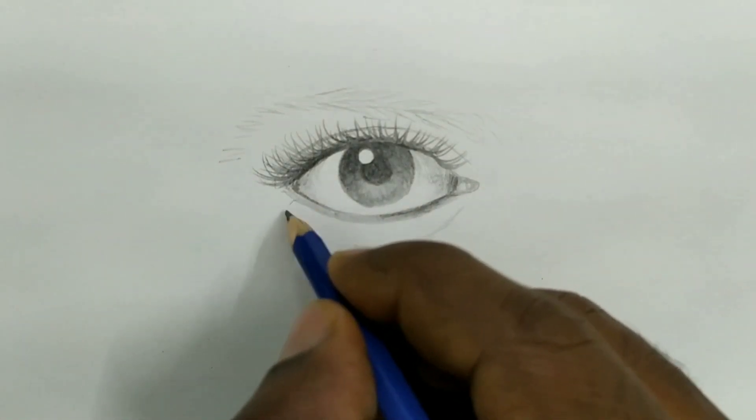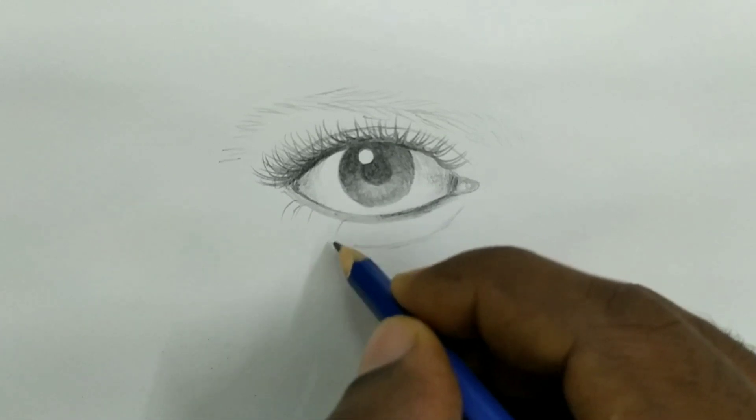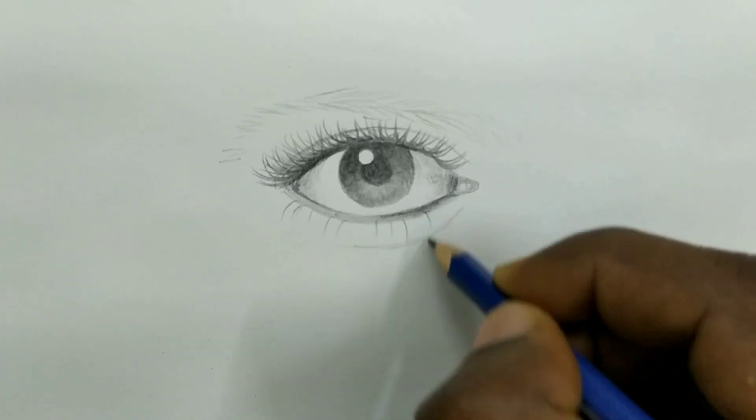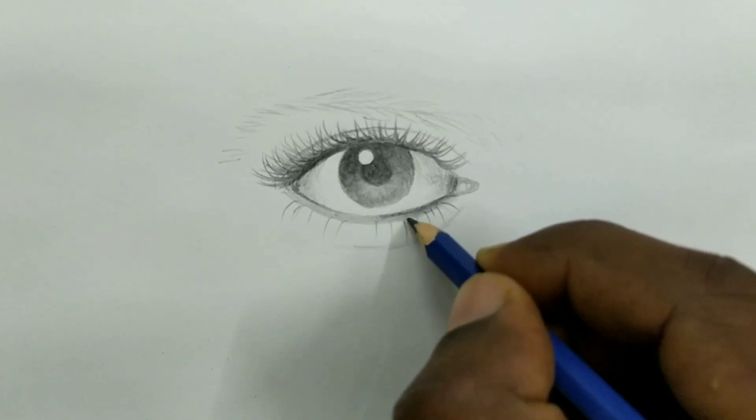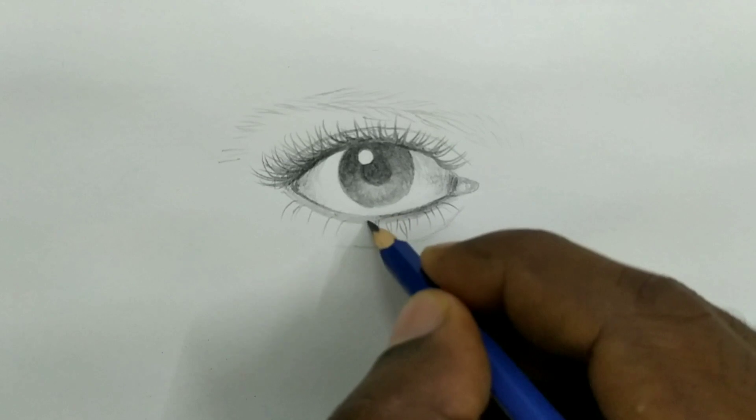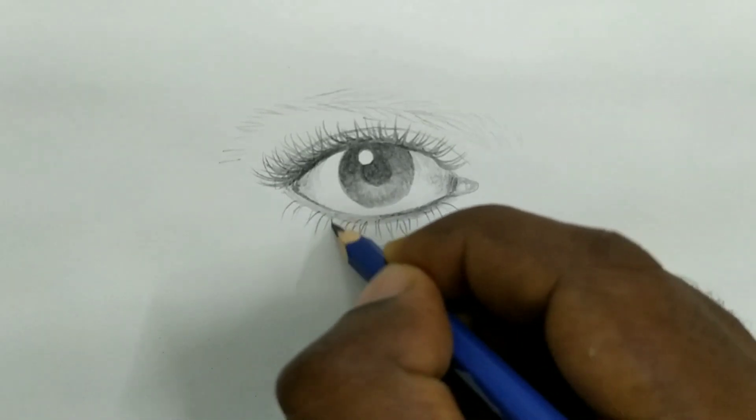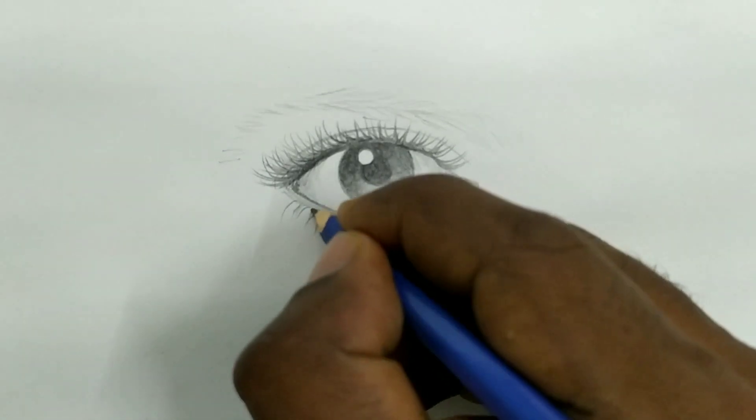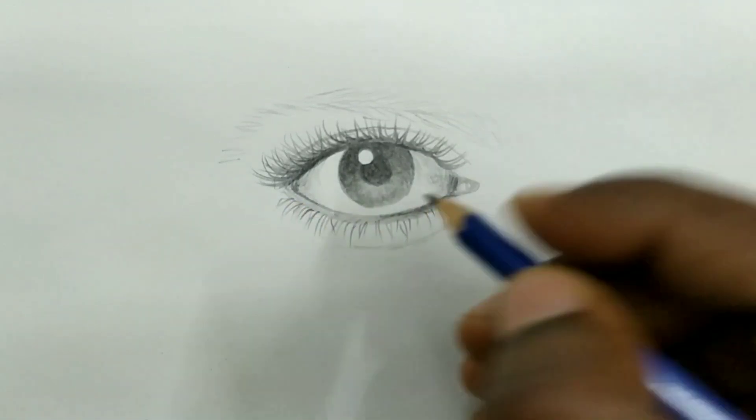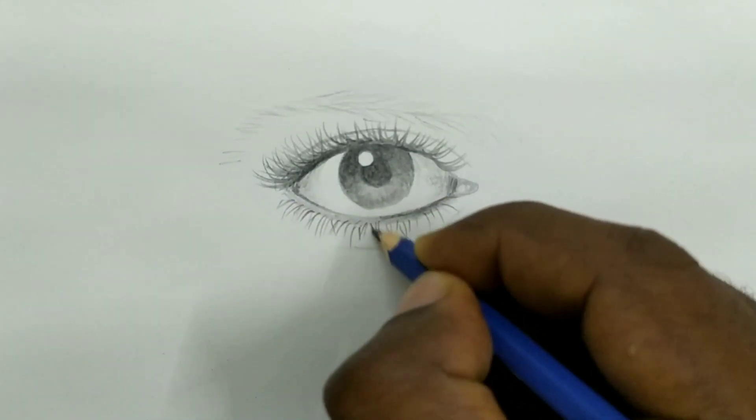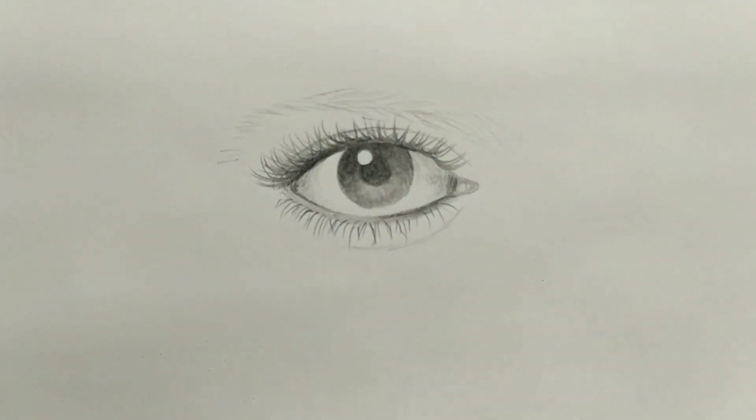This time we will make lower eyelashes, same method. Different directional eyelashes to the different sides. Make one or two first and add extra, additional. Yeah, that is fine.